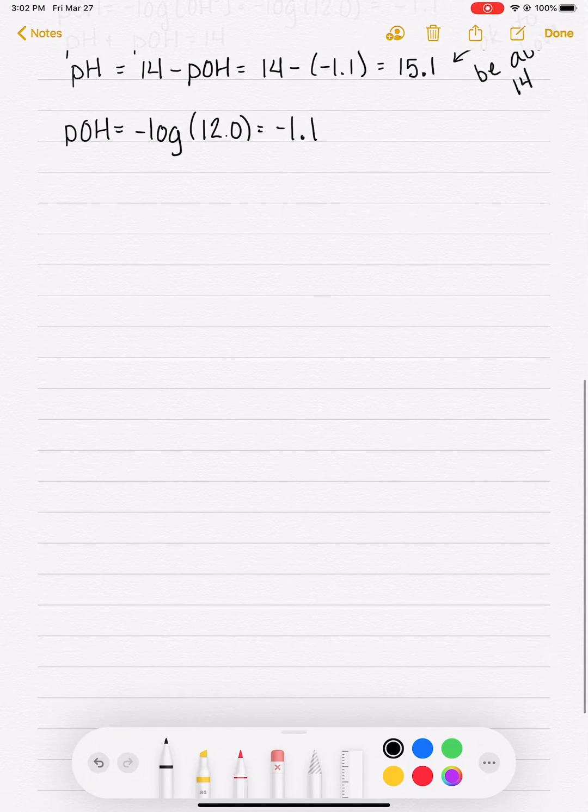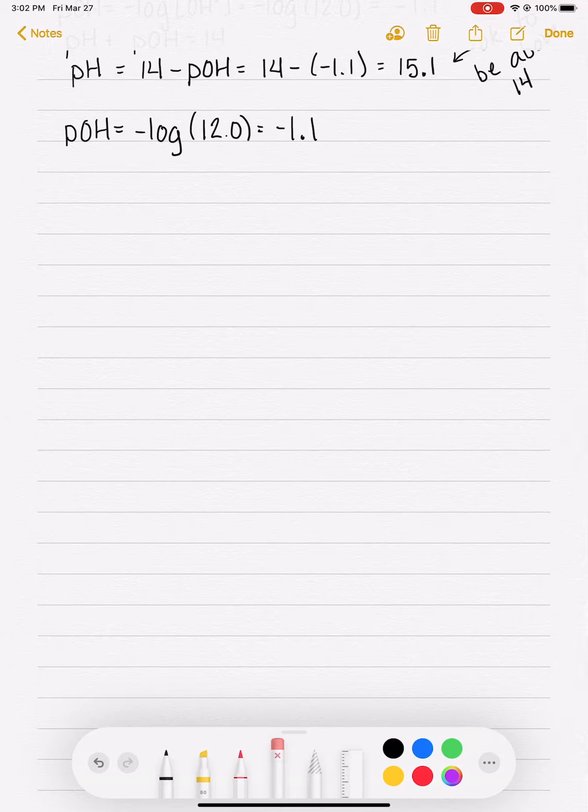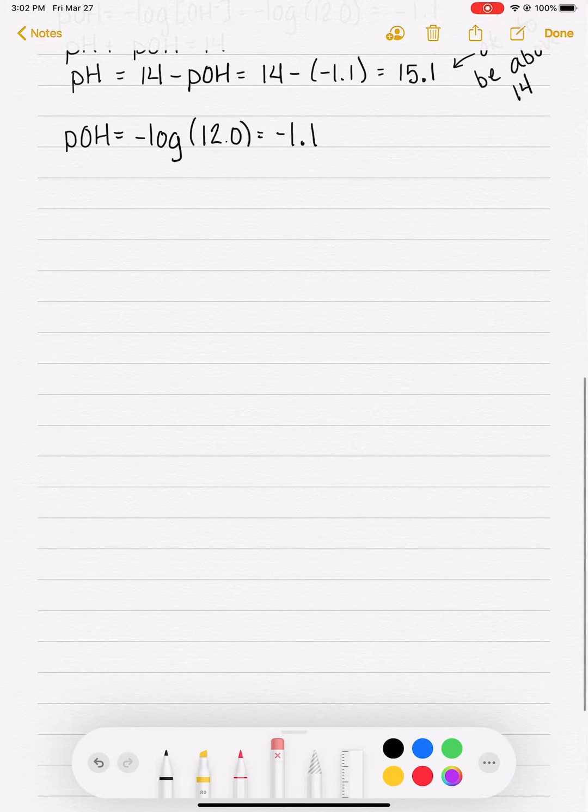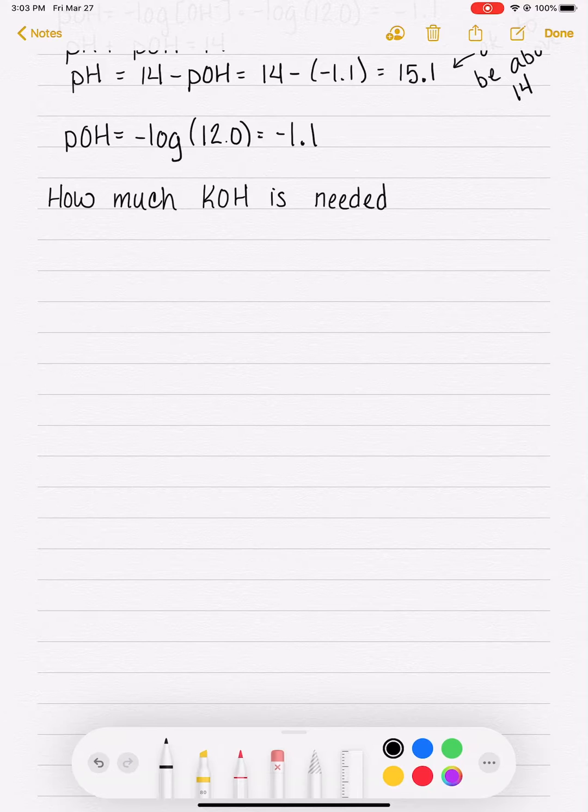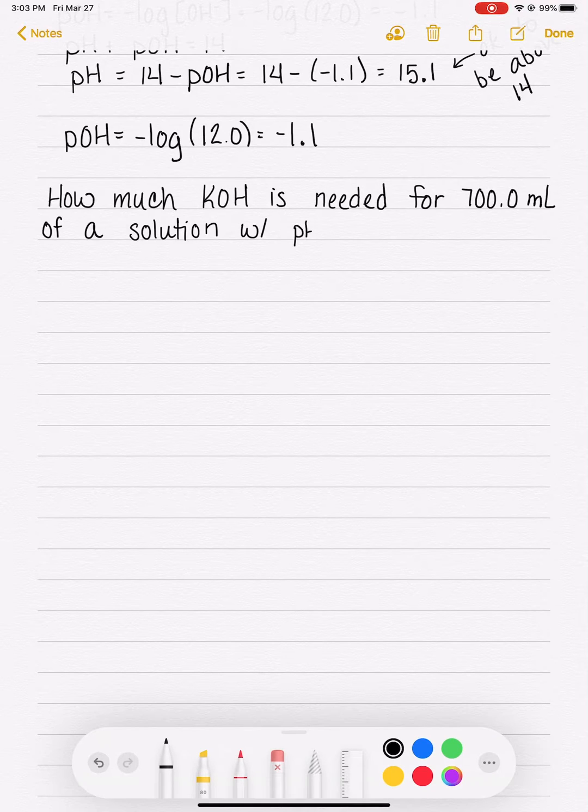The other scenario that you need to know how to do as a scientist is a problem like this. How much KOH is needed for 700 milliliters of a solution with a pH of 12?